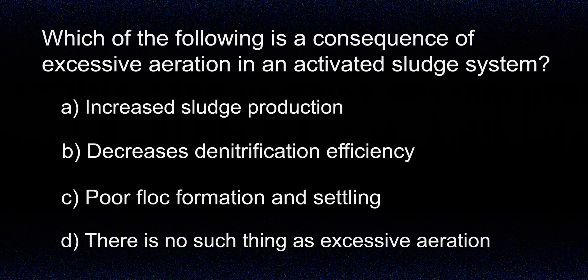Which of the following is a consequence of excessive aeration in an activated sludge system? A. Increased sludge production. B. Decreases denitrification efficiency. C. Poor flock formation and settling. D. There is no such thing as excessive aeration.